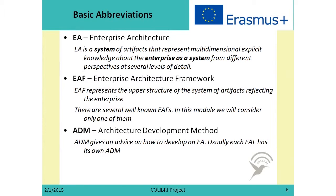The next abbreviation is EAF, which stands for Enterprise Architecture Framework. The Enterprise Architecture Framework shows the upper structure of the system of artifacts reflecting knowledge about the enterprise. There are several well-known Enterprise Architecture Frameworks, but in this module we will mainly consider Zachman's Enterprise Architecture Framework. The third abbreviation is ADM, which stands for Enterprise Development Method. The Enterprise Development Method gives advice on how to develop enterprise architecture, and usually each enterprise architecture framework has its own enterprise architecture development method.